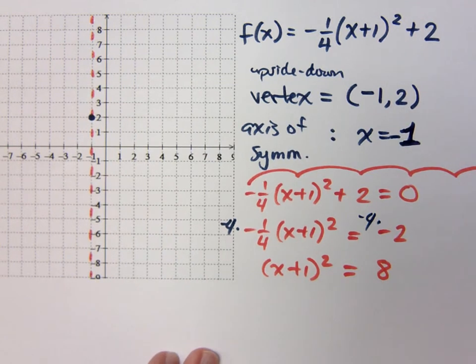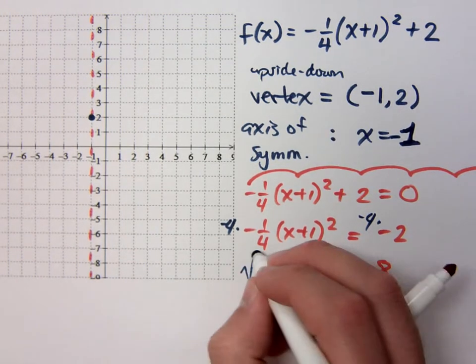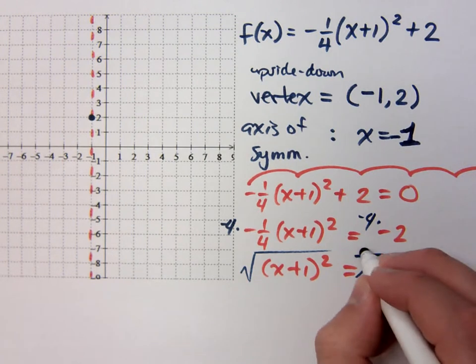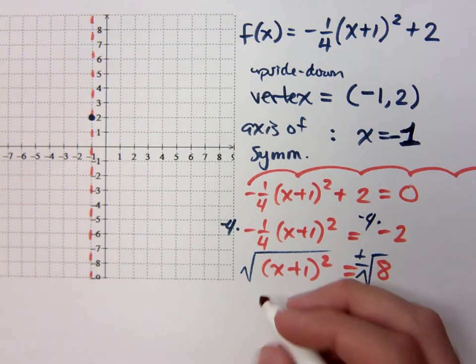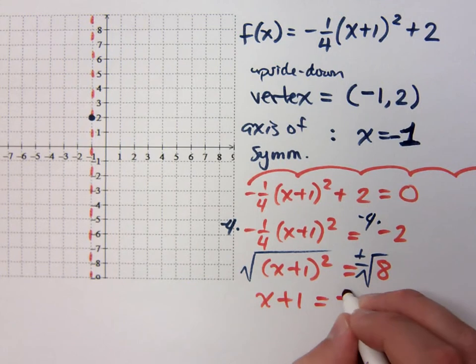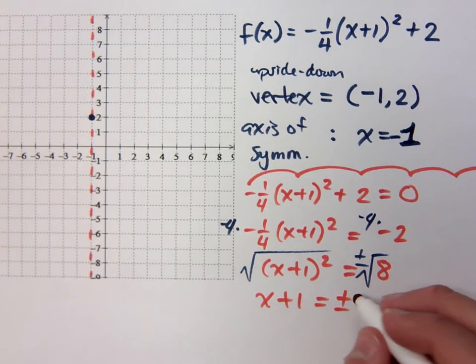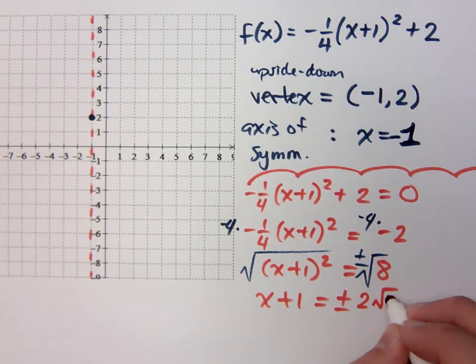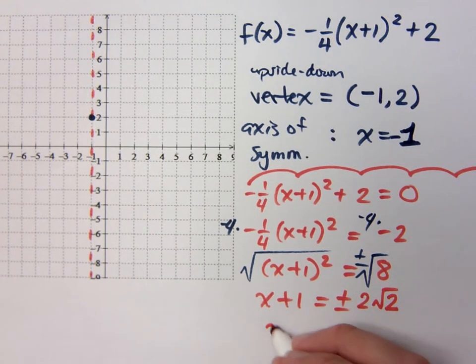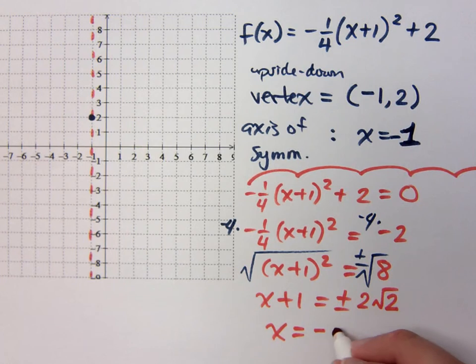So that means we have x plus 1 squared equals positive 8. So it had to be positive, right? So that when I take this square root, I get something real. It may not be pretty, but at least it's going to be real. So when I use that square root property to solve this guy, remember your plus or minus, that means x plus 1 equals what? Plus or minus square root of 8. How do you reduce or simplify the square root of 8? 2 square roots of 2. So what does x equal?